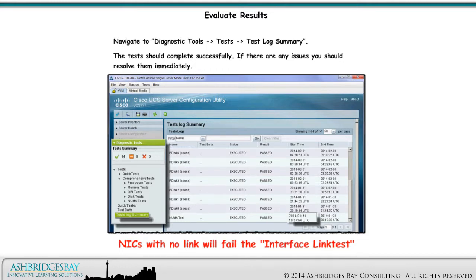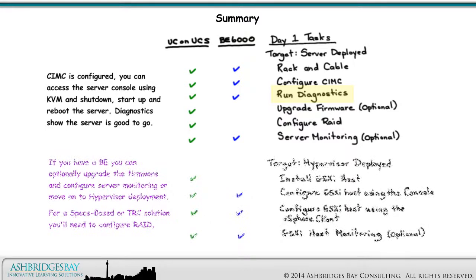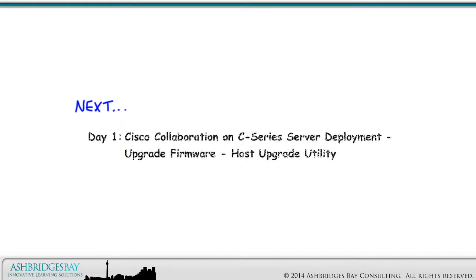NICs with no link will fail the interface link test. CIMC is configured. You can access the server console using KVM and shut down, start up, and reboot the server. Diagnostics show the server is good to go. If you have a BE, you can optionally upgrade the firmware and configure server monitoring, or move on to hypervisor deployment. For a specs-based solution, you'll need to configure RAID. Coming up next: Day 1, Cisco Collaboration on C-Series Server Deployment, Upgrade Firmware, Host Upgrade Utility.